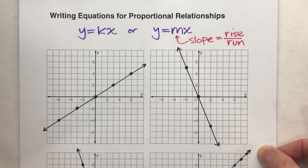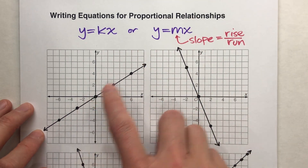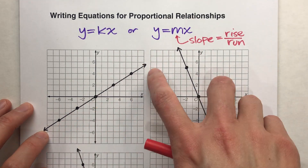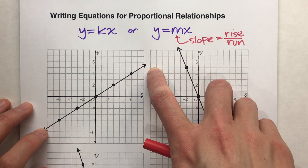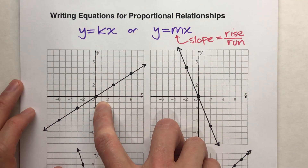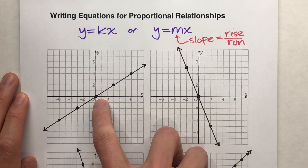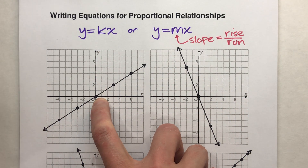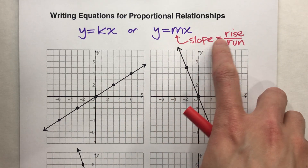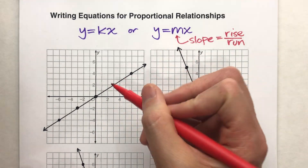In a proportional relationship, your graph will always be a straight line that goes through the origin, (0, 0). And in this case, there it is. Now, to write the equation, all we need to figure out is what the slope is.